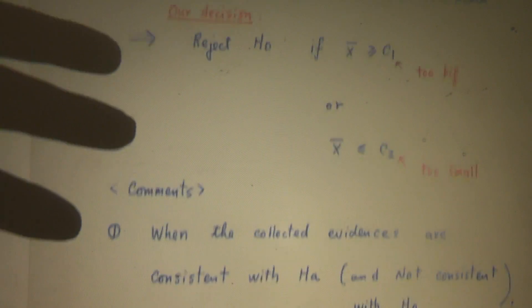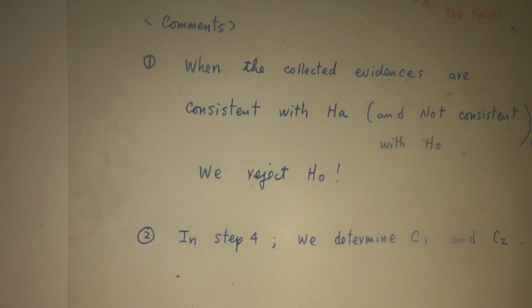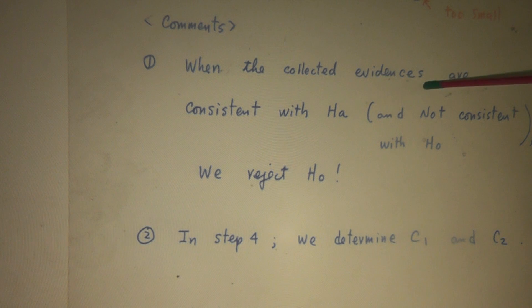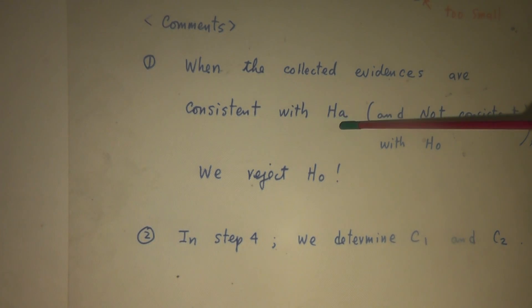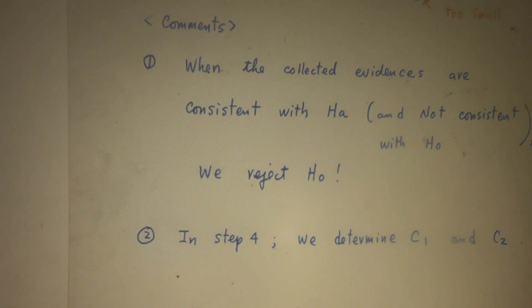Comments. When the collected evidence are consistent with HA and therefore not consistent with H-naught, of course we will reject H-naught. The collected evidence, from the collected evidence you see maybe HA is true. So the collected evidence support HA, but do not support H-naught, we reject H-naught.